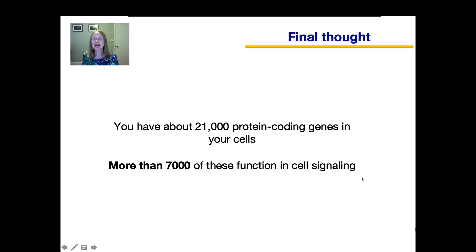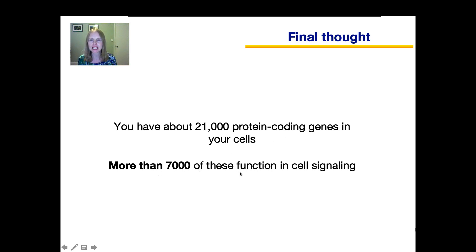That's the end of the presentation. Each of your cells has about 21,000 protein-coding genes, and of those, more than 7,000 are dedicated to functioning in cell signaling pathways. That's a pretty big percentage, and it shows that cell signaling is a major part of what your cells do — many of their genes are dedicated to carrying out signals so that cells can communicate.